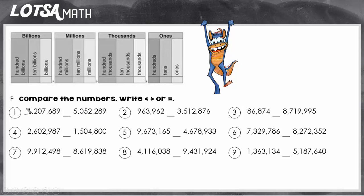So we would compare the one with the five, and just ask yourself which is bigger, one or five. So since one is less, one million two hundred and seven thousand six hundred and eighty nine is going to be less than five million. So we're going to use the less than sign.